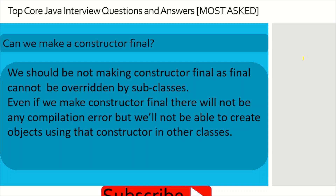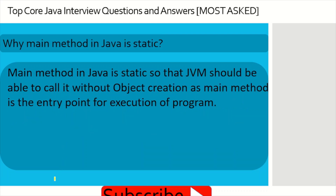Can we make a constructor final? We should not make a constructor final because it cannot be overridden by subclasses and new objects cannot be created in other classes easily. However, if we do declare a constructor as final, it will not give a compilation error — it will compile successfully, but it is not recommended practice.